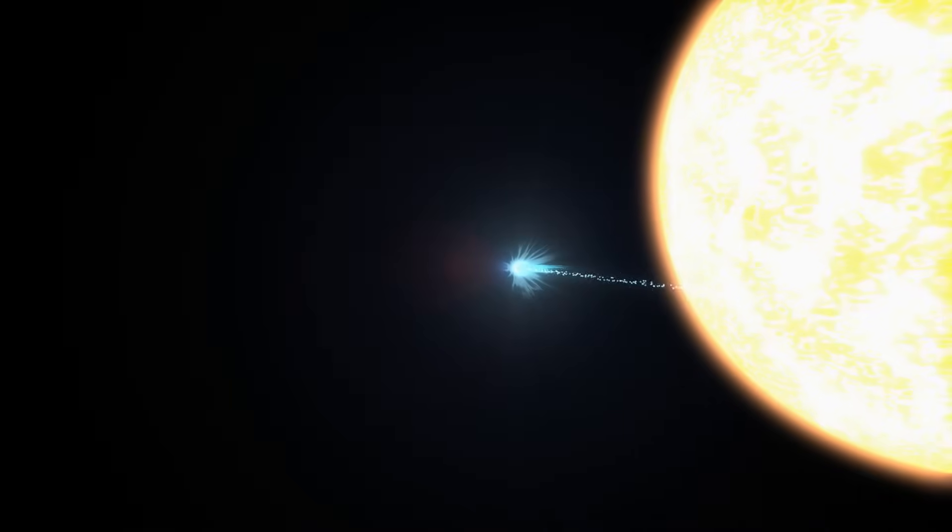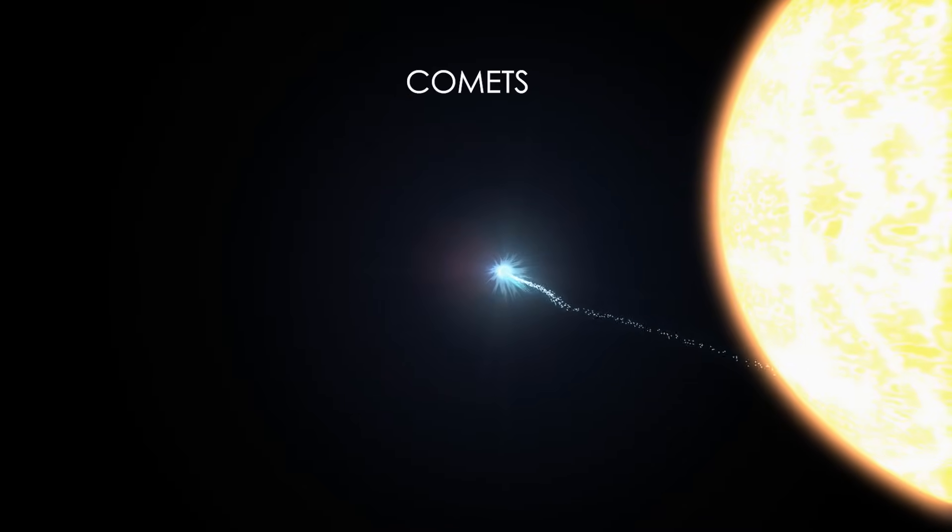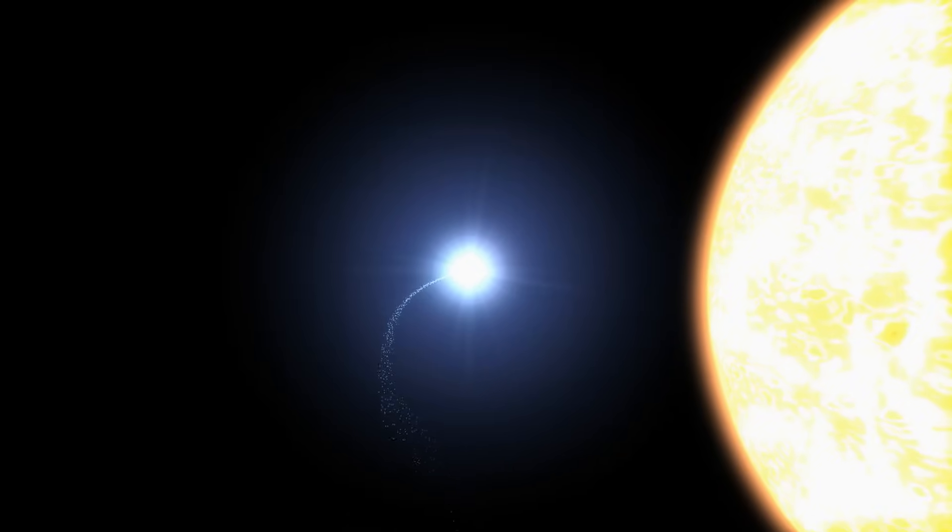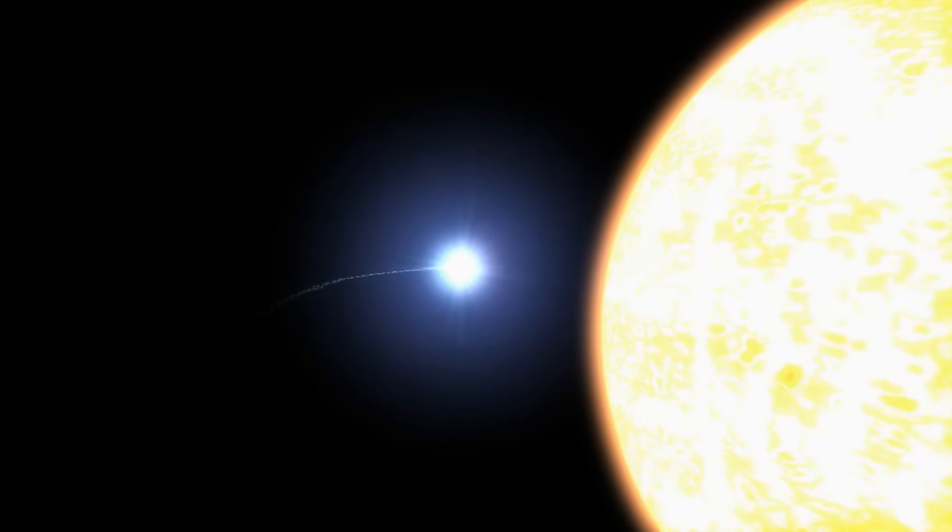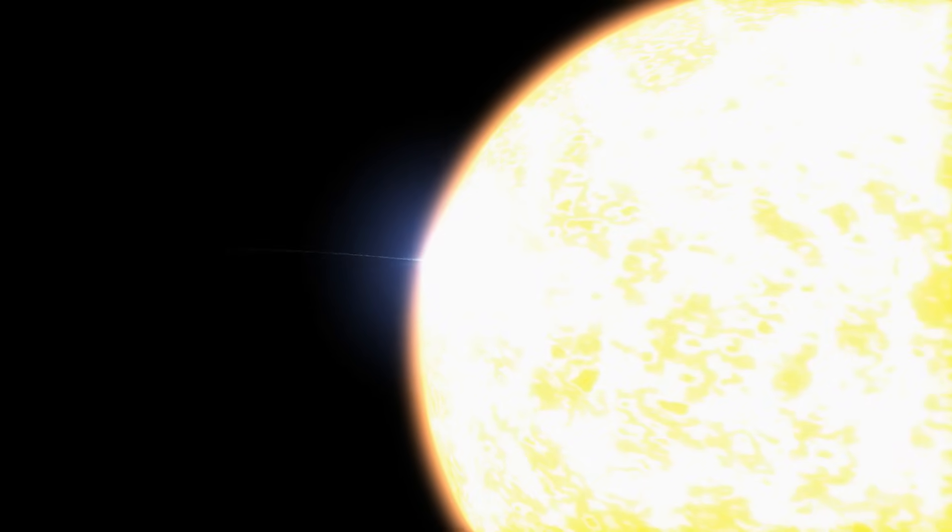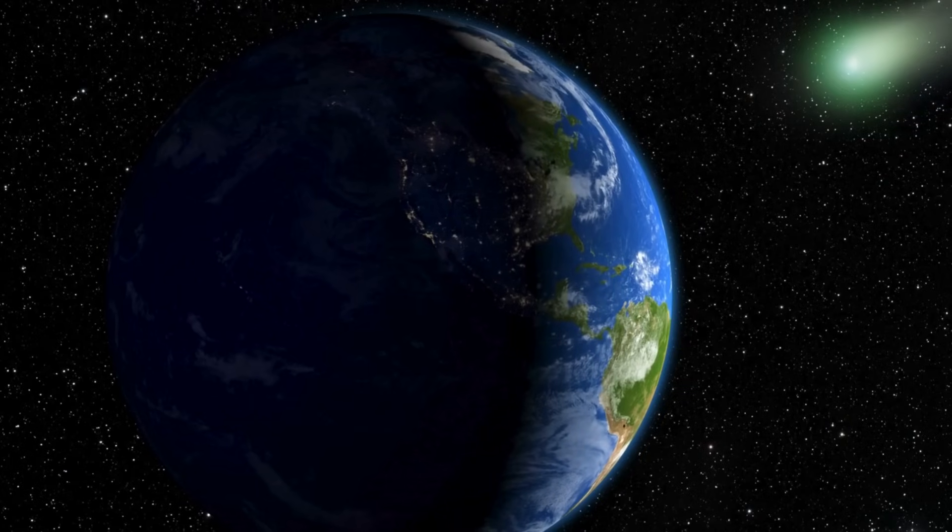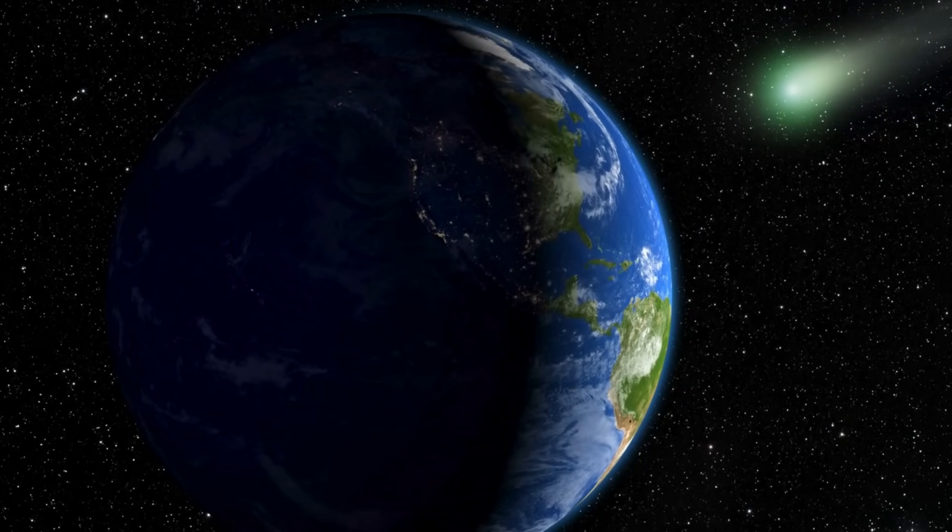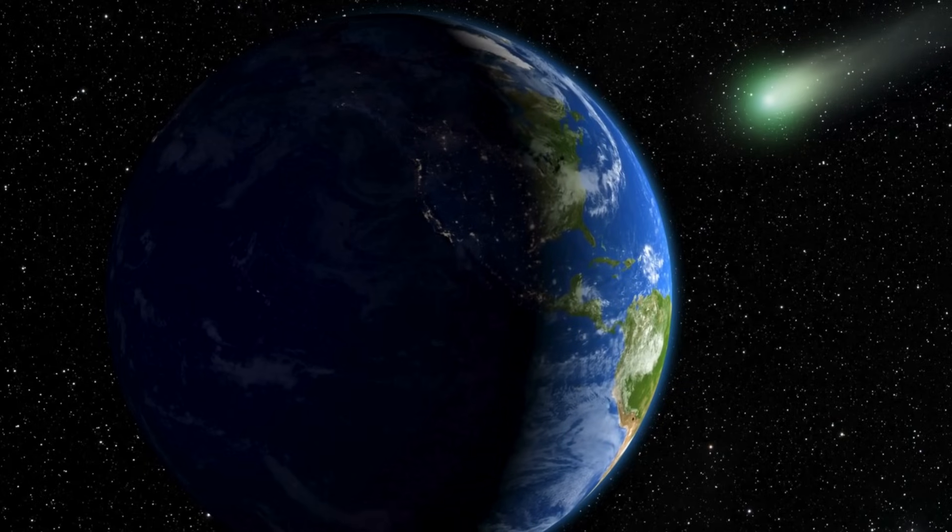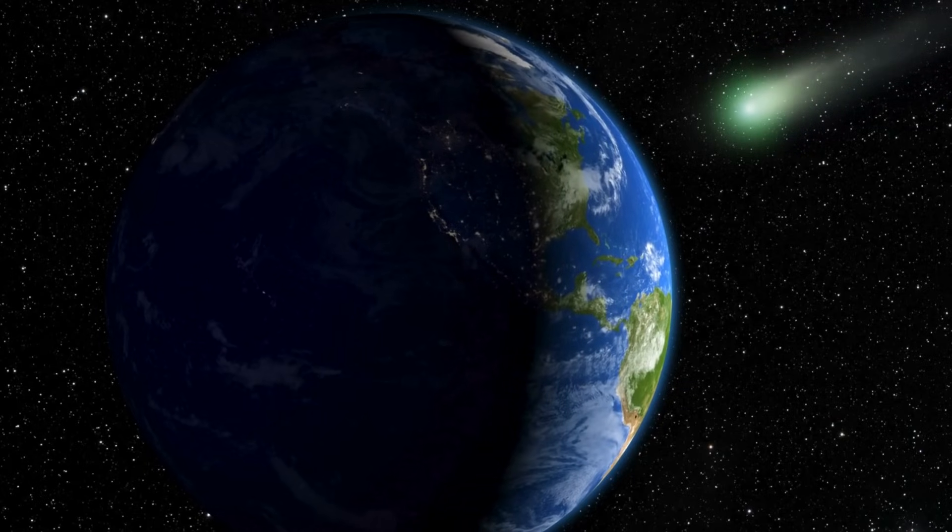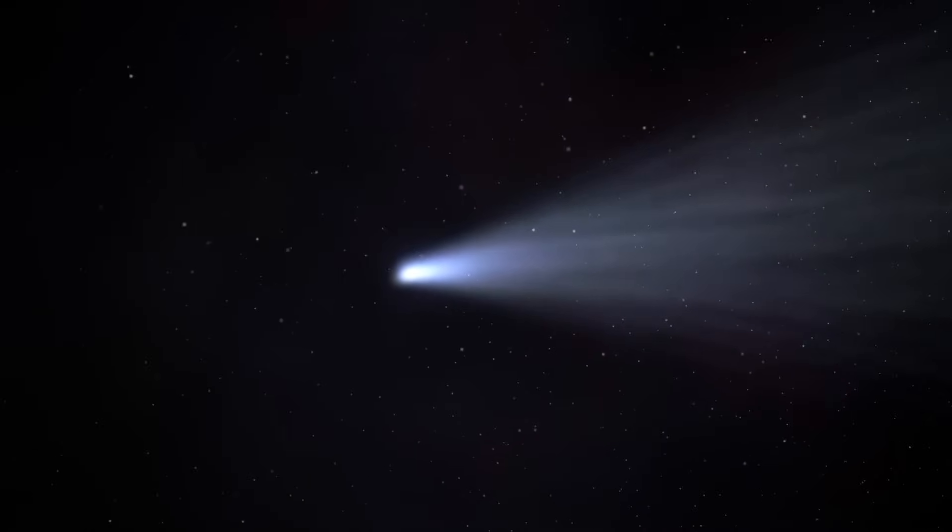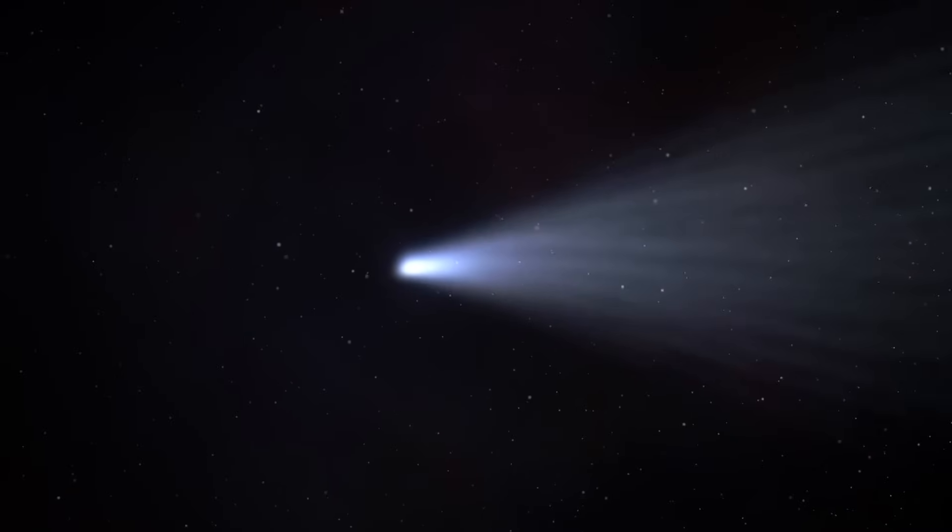Even more damning to the flat disk narrative are comets, ancient messengers from the outer solar system that routinely arrive from directions that should be impossible according to simplified models. Many comets follow orbits that are nearly perpendicular to the ecliptic, diving down into the inner solar system from what orthodox astronomy considers above, then exiting in entirely different directions. How can this happen in a supposedly flat system?